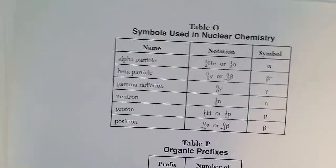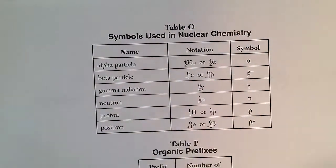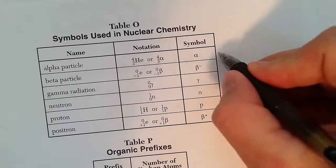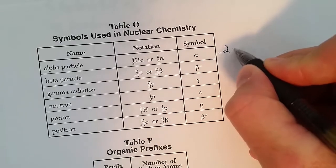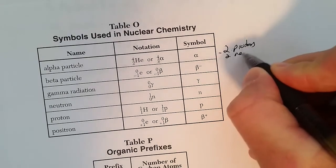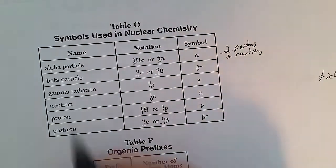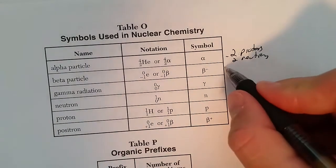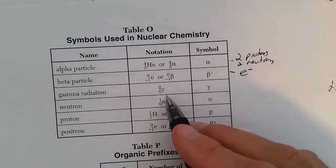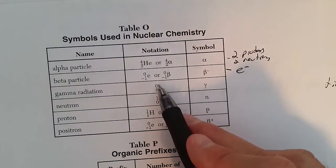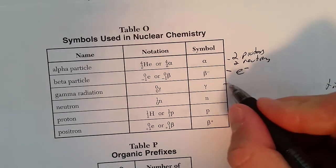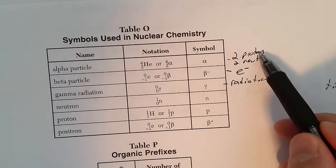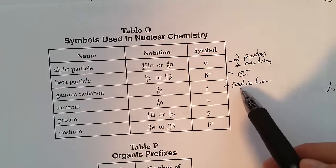These are all on Table O. Alpha particle has an atomic mass of 4, an atomic number of 2, so that's 2 protons and 2 neutrons. Beta particle has a mass of 0, atomic number of negative 1, because it's basically an electron. Gamma radiation, mass of 0, charge of 0, it's only radiation. Alpha is the biggest, then beta, and then gamma since it has no mass at all.